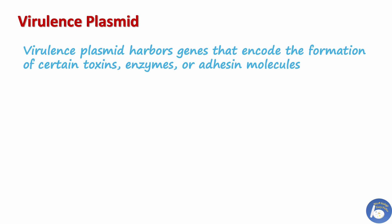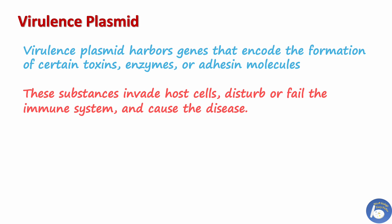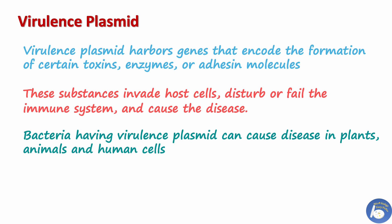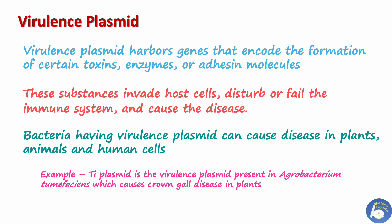Virulence plasmid: virulence plasmid harbors genes responsible for the formation of certain toxins, enzymes, or adhesive molecules, which can invade host cells, disturb the immune system, and cause disease. Bacteria having virulence plasmids are able to cause disease not only in humans but also in plants and animals. For example, the Ti plasmid is a virulence plasmid found in Agrobacterium tumefaciens, which causes crown gall disease in plants.